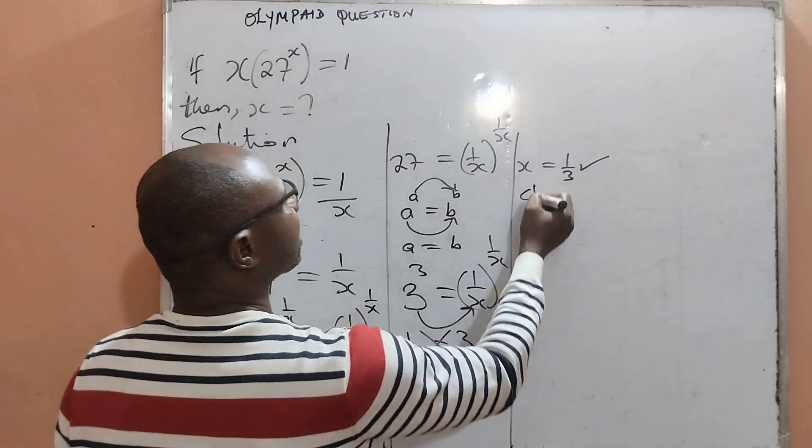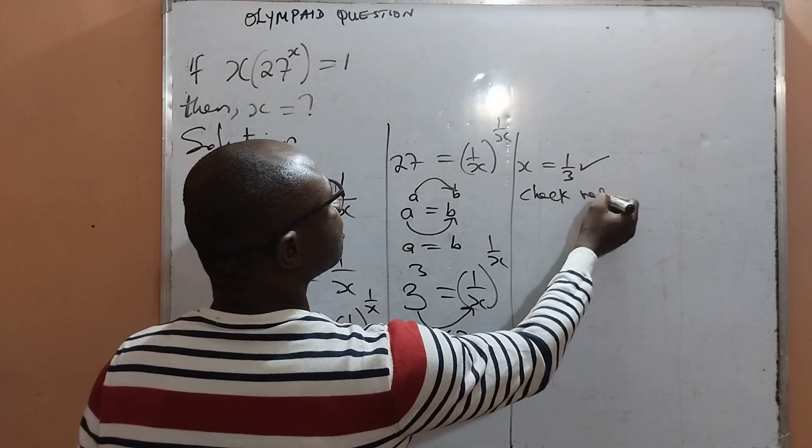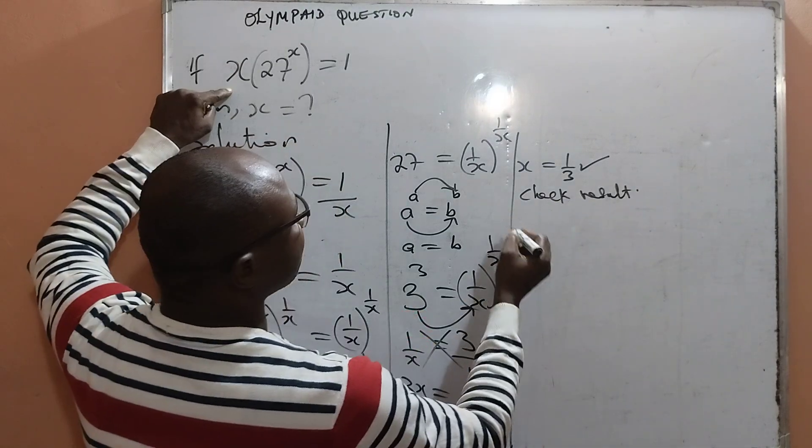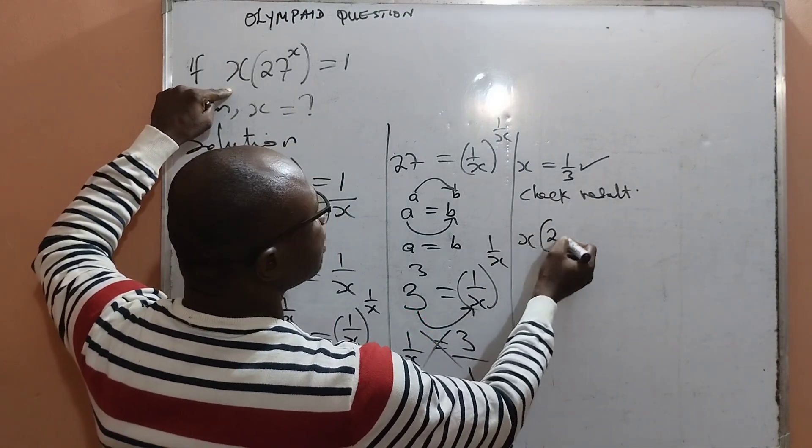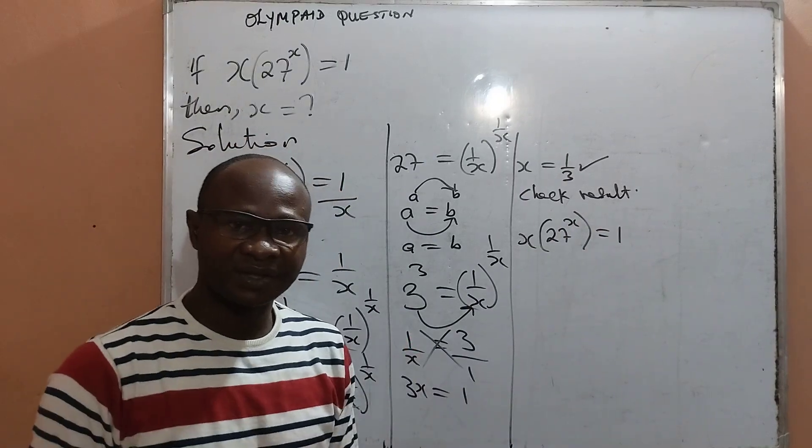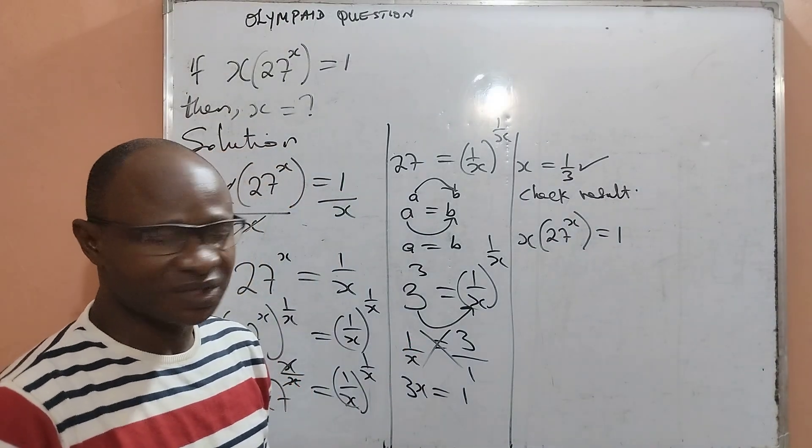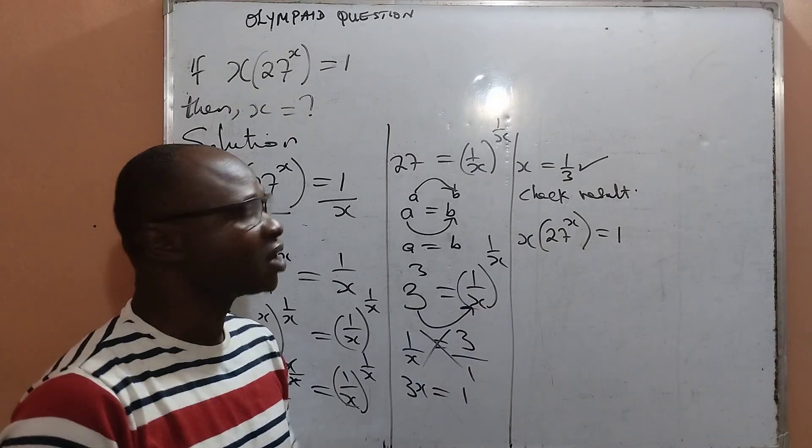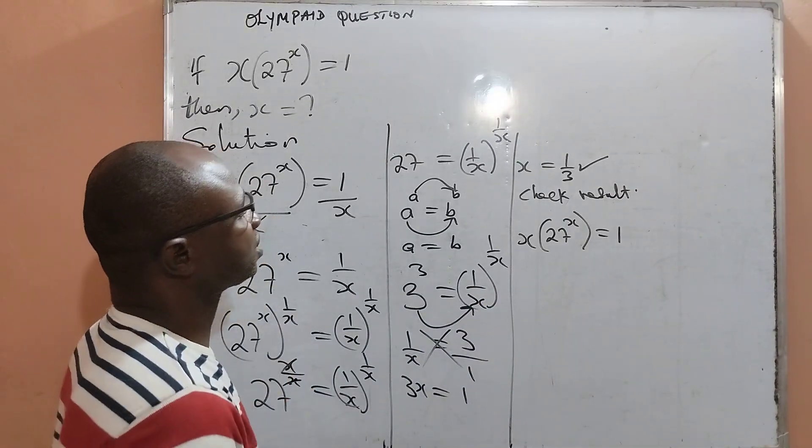We check result quickly. Check result. From the question we are given that x into 27 to the power of x is equal to 1. So we want to find out when the value of x is replaced into the given question, will the right hand side and the left hand side be equal? That is the question.